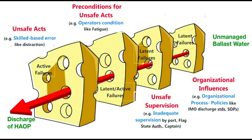The Swiss cheese model by James Reason. Picture a stack of Swiss cheese slices — each slice represents a layer of defense against failure, but like all good Swiss cheese, they have holes. When the holes line up just right, trouble can slip through. Usually none of the accidents happen because of only a single reason. There are many contributing factors and preconditions that start unfolding one by one, and when this chain of events lines up without any preventative measures, we end up with an incident or even a serious accident.